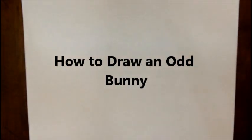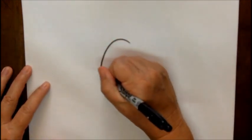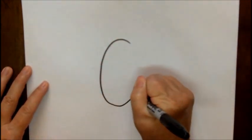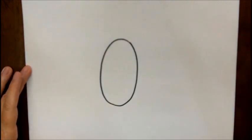Today I'd like to show you how to draw a bunny. This is kind of an odd bunny, a little bit unconventional, so let's get started. We're going to start out with an oval shape. That's going to be his head and body together.